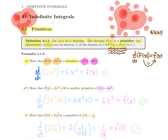Let's compute the derivative of big F, which is 2x cubed. Using the power rule, the 3 falls up front and multiplies the 2, becoming a 6, and the new power is the former power minus 1, giving 6x squared. That derivative is small f. So yes, 2x cubed is indeed a primitive for 6x squared.